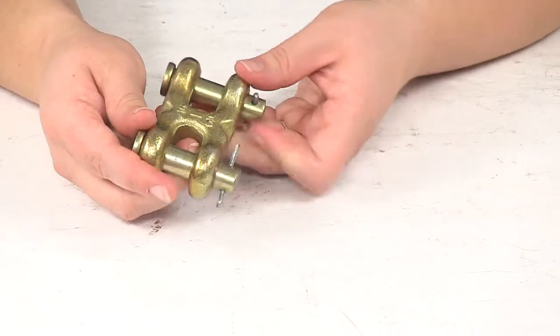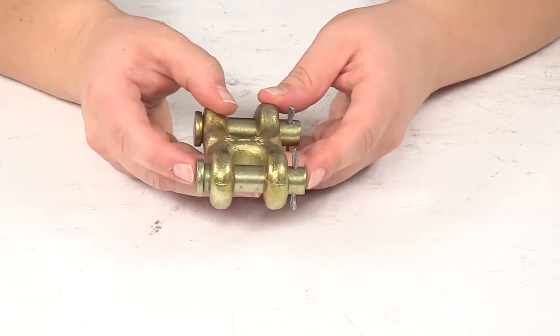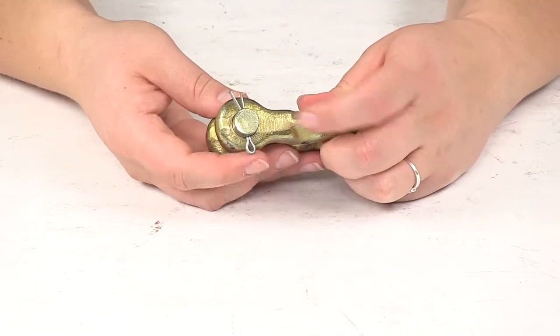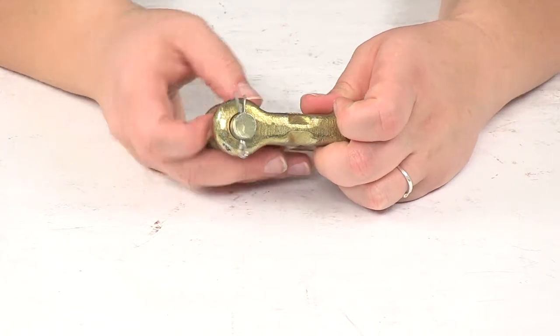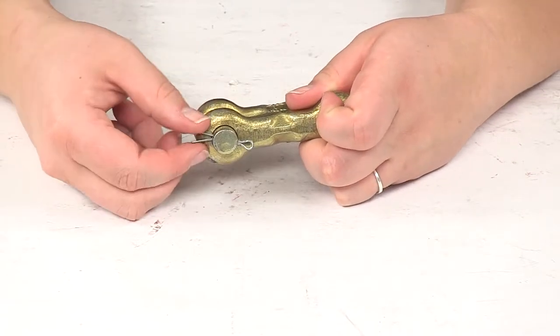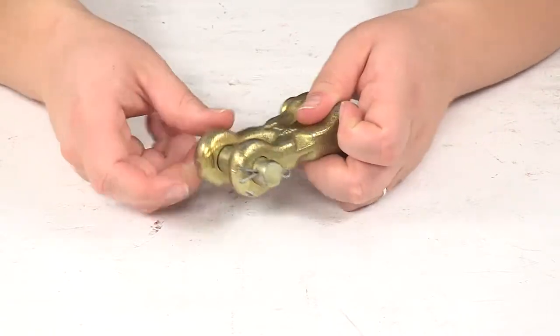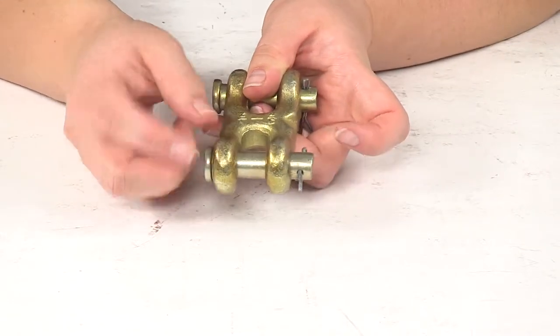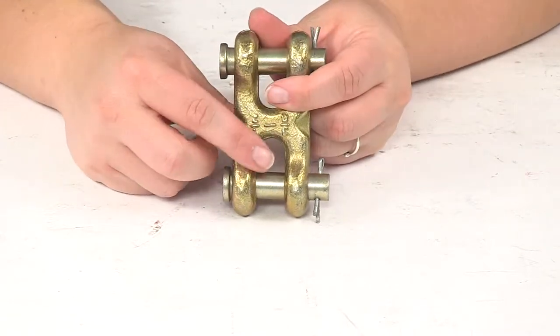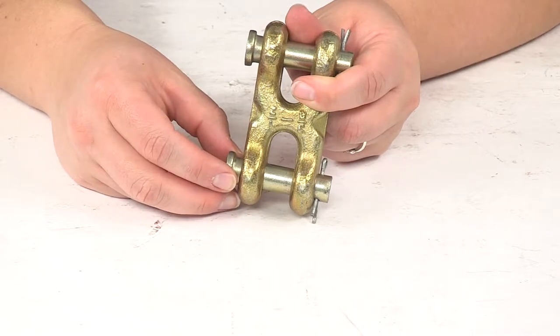It's going to have the included clevis pins there with a cotter pin to secure them in place. You just have to pinch the ends of that cotter pin, push it through the opening, and that will allow you to open up the attachment point there by pulling out the clevis pin.